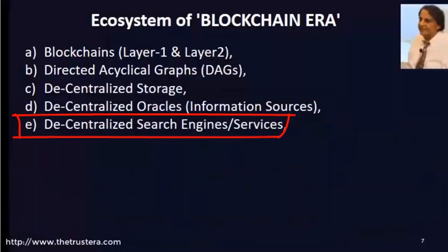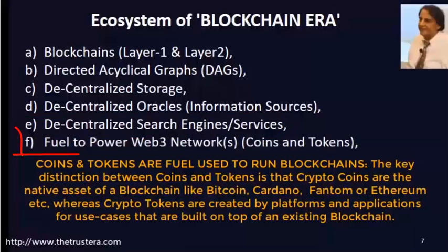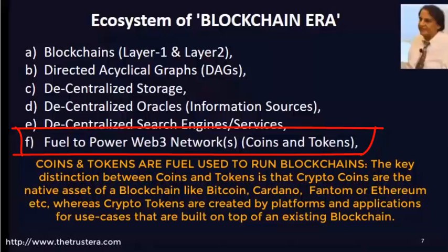Another component is decentralized search engines. The Graph Protocol is a search engine that falls into this category of the ecosystem. Then there are coins and tokens — these are the fuel used to power Web3 networks. Coins and tokens are used to pay for services, both as an on-ramp tool on the network and as transaction fees for applications.